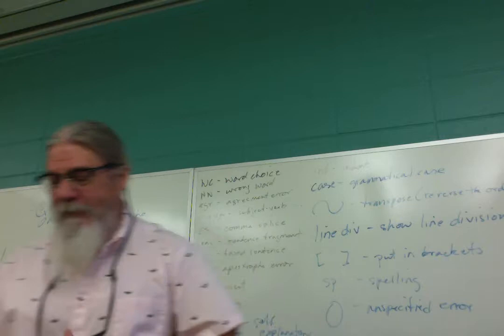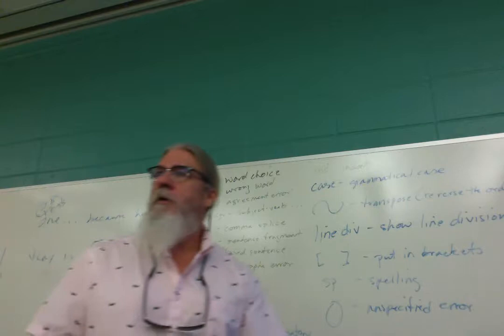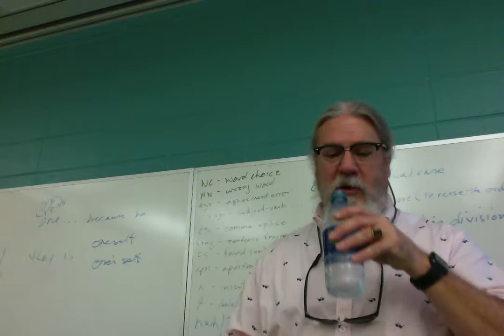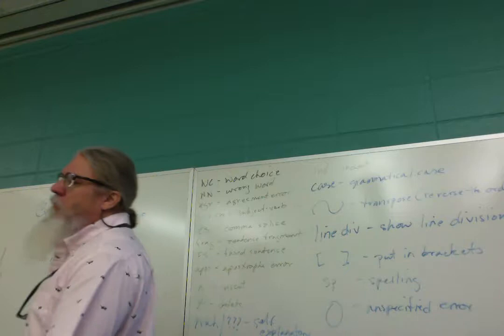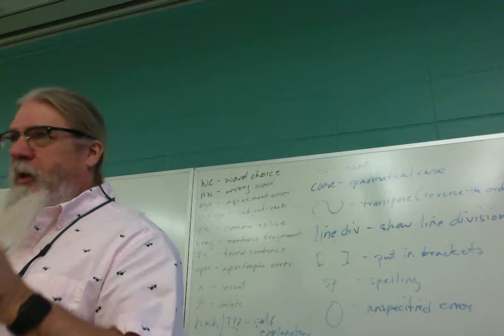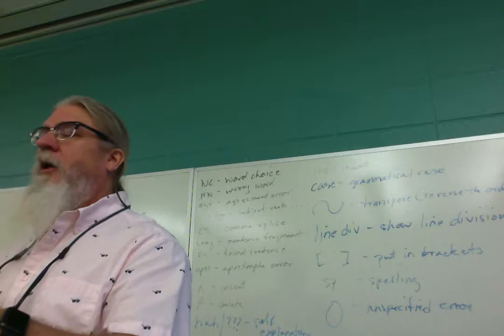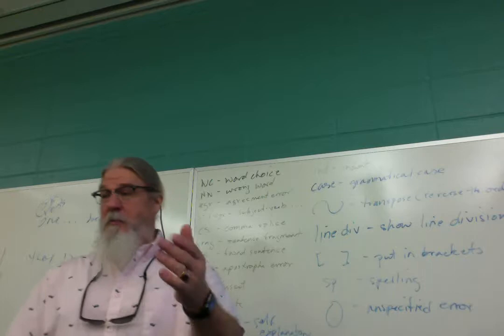Comma splices: what's a comma splice? Two independent clauses separated by a comma. For example: 'Bottom went into the wood, he was transformed into an ass.' Each of those is an independent thought. Fix it as: 'Bottom went into the wood, and he was transformed into an ass,' or use a semicolon: 'Bottom went into the wood; he was transformed into an ass.'